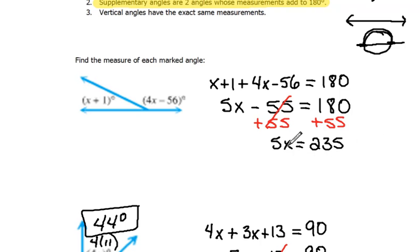Now we still need to solve for x, so the opposite of multiplying it by 5 would be to divide everything by 5. So now here again, are we done?